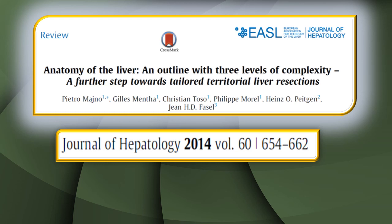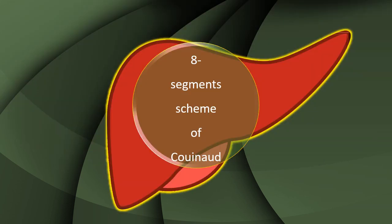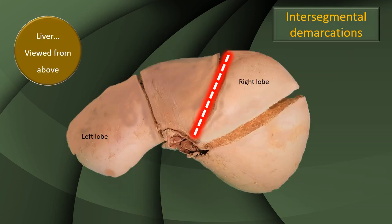Before proceeding with segmental anatomy in detail, this is an important reference I have used to explain this video. In summary, although there are many newer concepts, the base concept as far as segmental anatomy of the liver is concerned remains Couinaud's classification — the eight-segment classification or the eight-segment scheme of Couinaud.